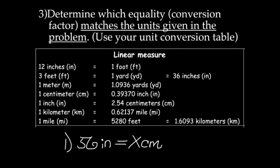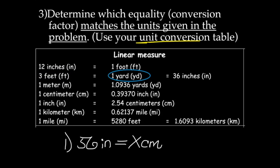On to step three: determine which equality or conversion factor matches the units given in the problem, and use your unit conversion table. Let's talk about how to use the unit conversion table. Today we're using the bottom portion — the unit conversion area. Anything in the same row is equal to each other. For example, three feet equals one yard — that's a good equality or conversion factor. It's also true that one yard equals 36 inches.